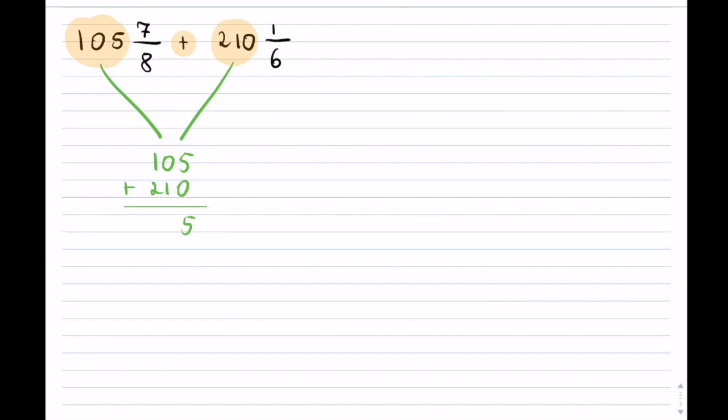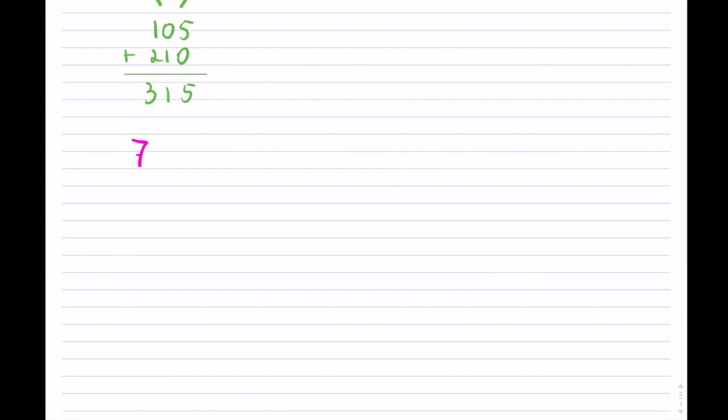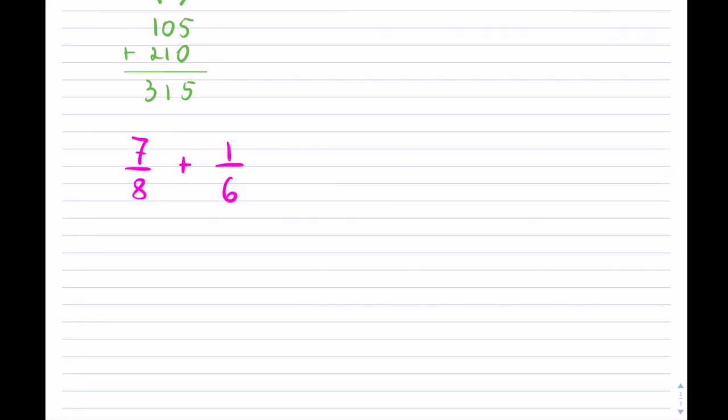So 105 plus 210 to get us the whole component. So that's going to be 5, 1, 3. So this equals 315. And now I need to concentrate on the fractions. 7 over 8 plus 1 over 6. So let me do it over here. 7 over 8 plus 1 over 6. I need a common denominator between them.